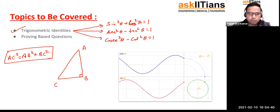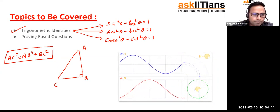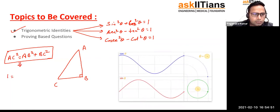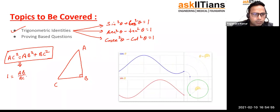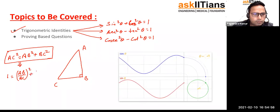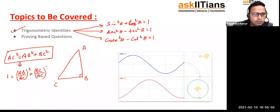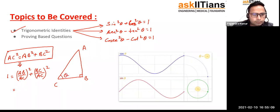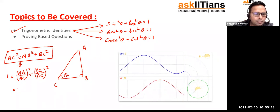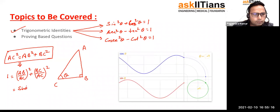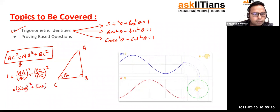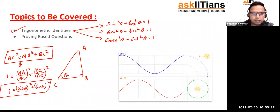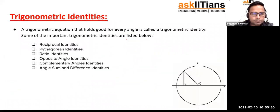Let me show you. Using Pythagoras theorem, if I divide both sides by AC², I get: AC²/AC² = (AB/AC)² + (BC/AC)². Now if this angle is θ, then the opposite side divided by hypotenuse is sine θ, and the adjacent divided by hypotenuse is cos θ. So we get sin²θ + cos²θ = 1. This is how we get the identities — we can get the remaining two in a similar way.